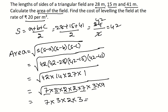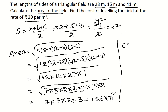So the area is 21 times 6, which equals 126 meters square. To find the leveling cost: 126 meters square multiplied by 20 rupees per meter square equals 2520 rupees.